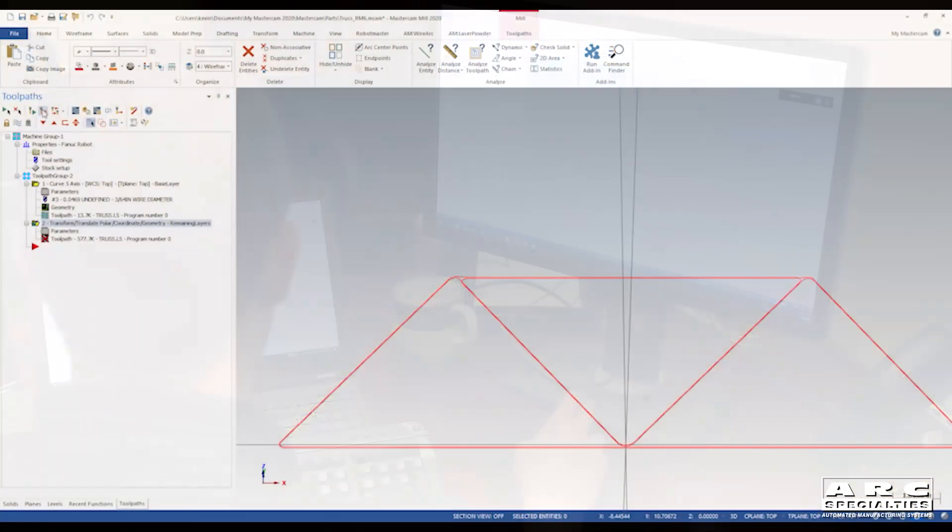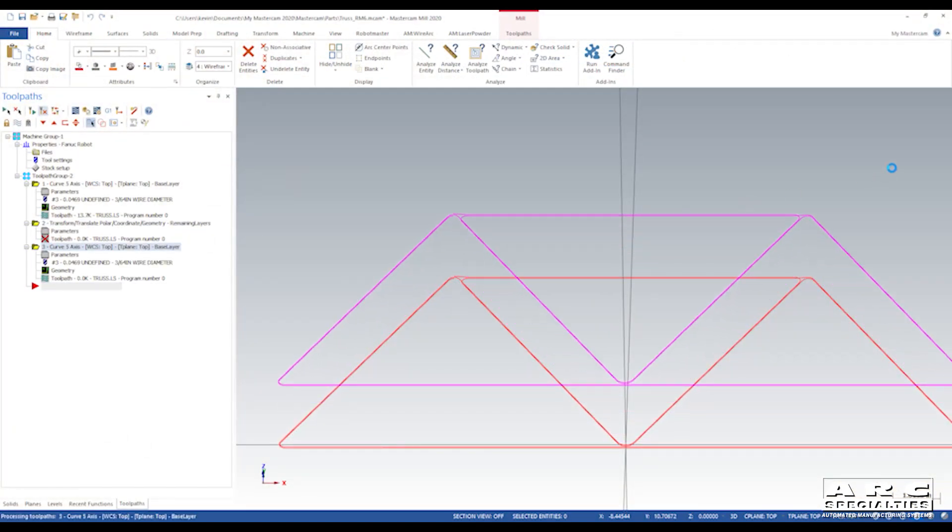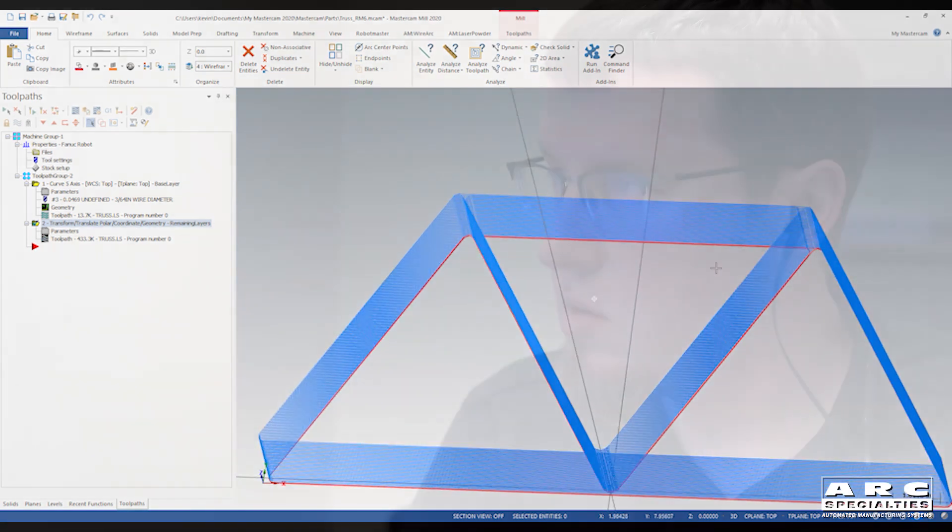One thing we've learned is if we can avoid breaking and then restarting the arc, we typically get a better part. So in this case, Kevin's come up with a way to weld this part without ever breaking the arc.